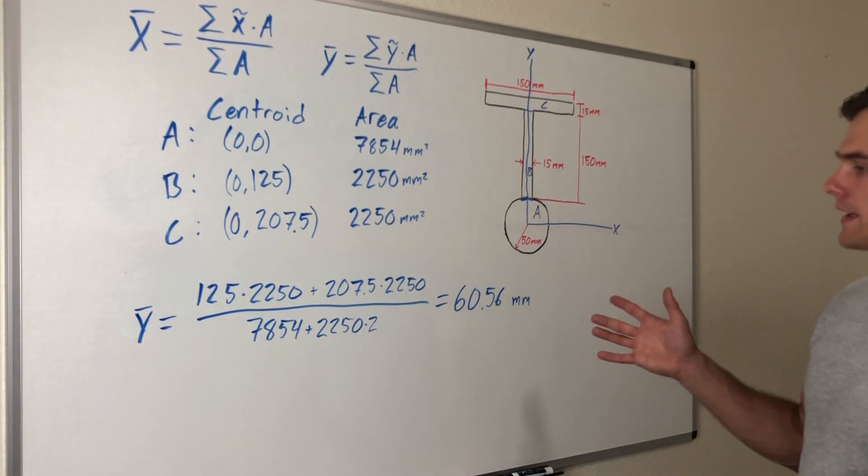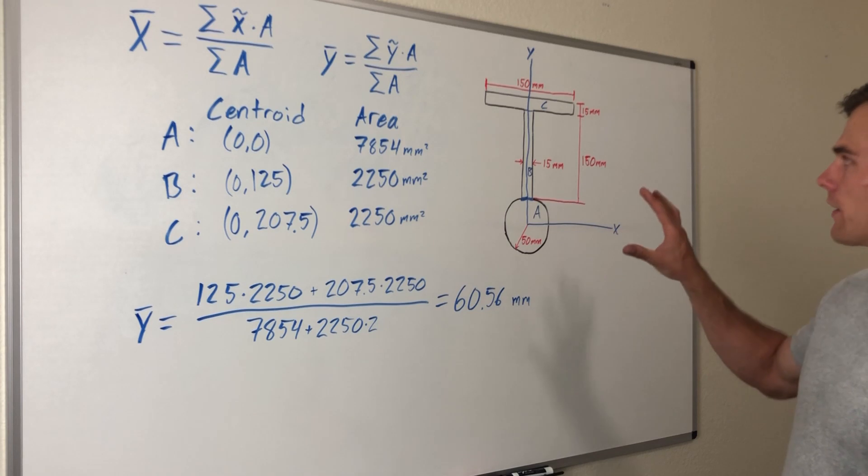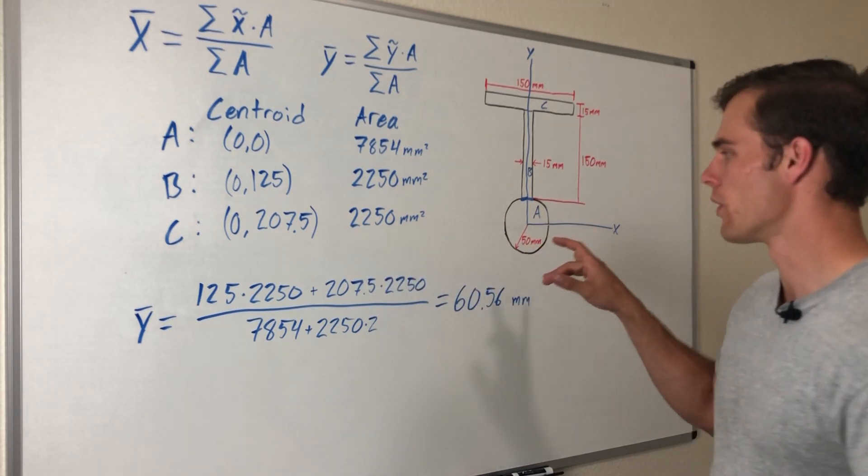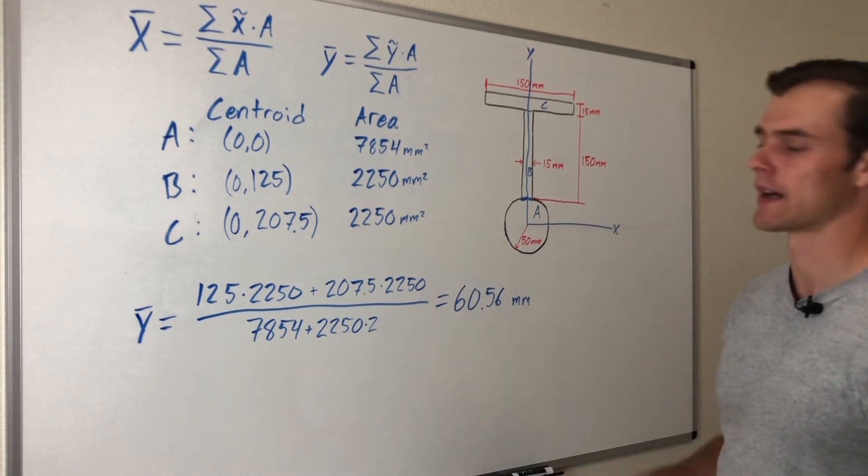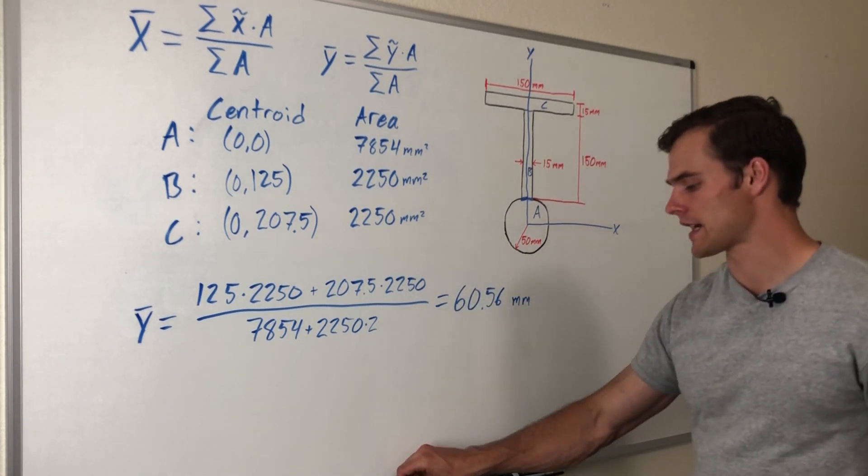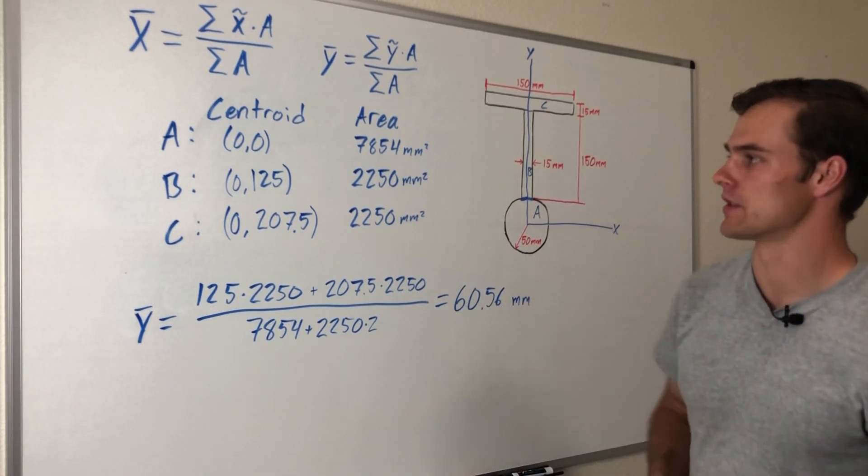That's it. But say if we were to have a hole in this object somewhere, remember that we would still need to find the centroid and the area of that hole, but that area would be counted as negative. So in this part it would be subtracting. Just a little side note for different situations.